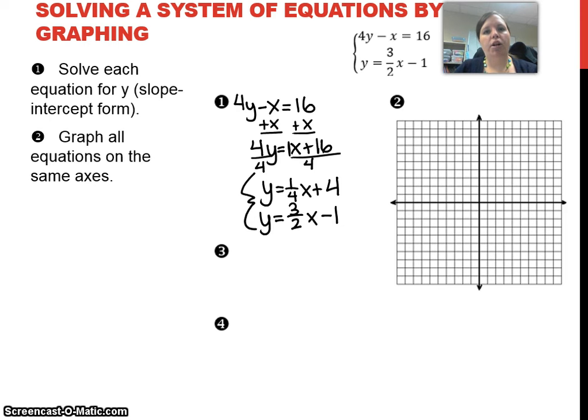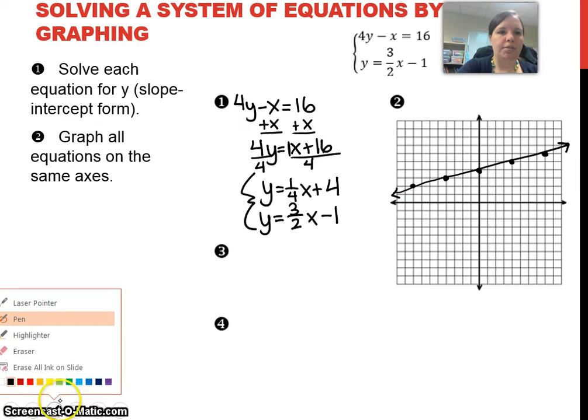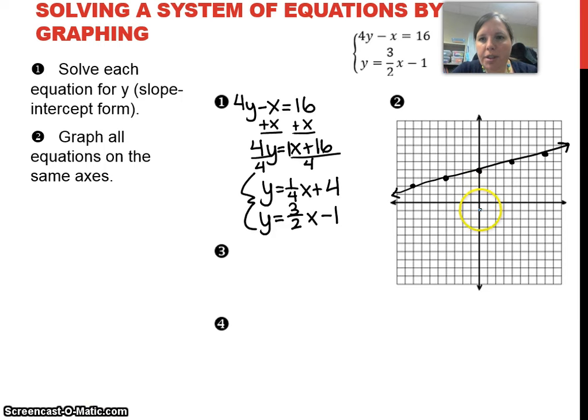Step 2 is to graph all equations, in this case we only have 2, on the same axis. I turned it into slope-intercept form so now I have an easy equation to graph. If I graph my first equation, my y-intercept is 4, and my slope is up 1 to the right 4, or down 1 to the left 4. So there's my first line. Now I'm going to change color to do my second line. My second line has a y-intercept of negative 1 and a slope of up 3 over 2, or down 3 left 2. And there's my line.